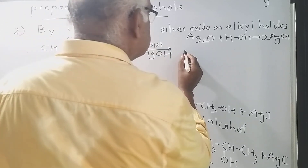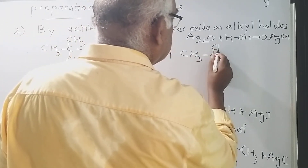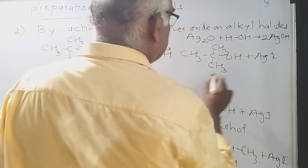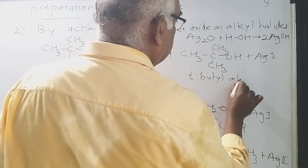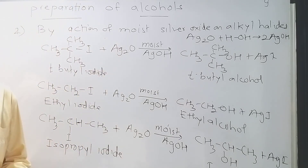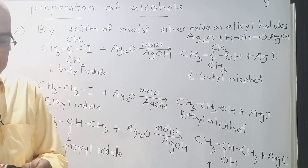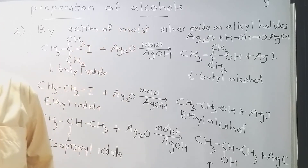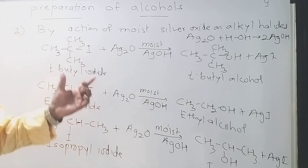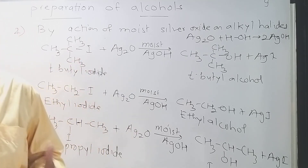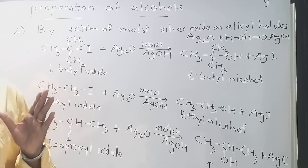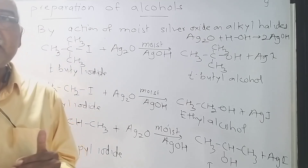And for tertiary butyl iodide treated with moist Ag2O, you will get (CH3)3COH plus AgI — tertiary butyl alcohol. So to prepare alcohols, you can use either aqueous alkali NaOH or KOH, or moist silver oxide. This is the alkaline hydrolysis of alkyl halides method.